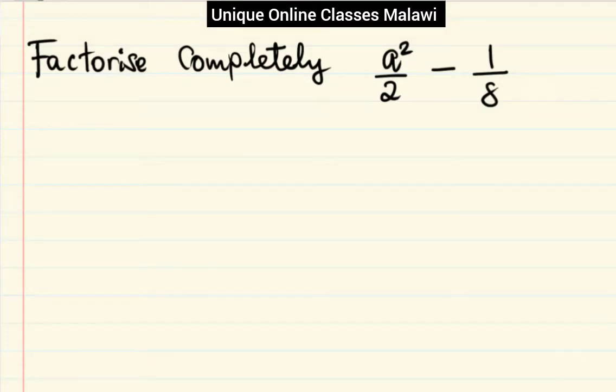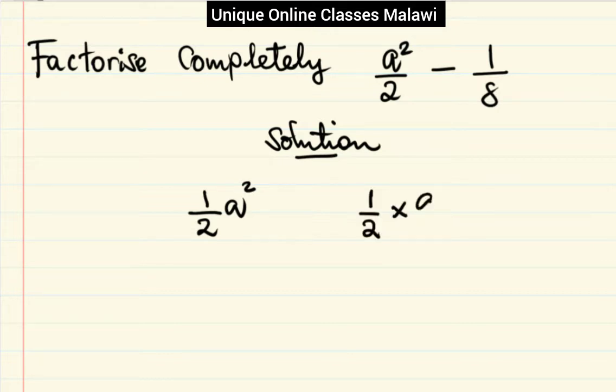Let's see the solution of this one. I would actually factorize it completely. So let me write the solution here to make this one simpler. Then we want to write a half, a squared. It's the same thing before, it's like a half a squared.